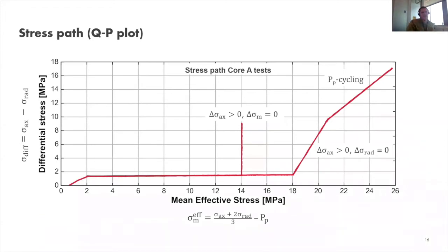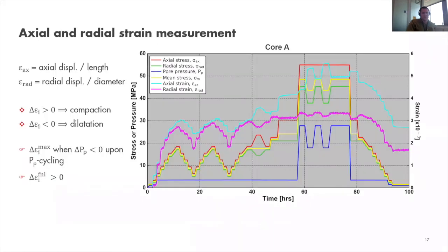For those familiar with QP plots — differential stress against mean effective stress — this is the shape of the QP diagram for each experiment. This is the part where we increase axial stress at constant mean stress, and this is the differential stress increase during pore pressure cycling at constant radial stress. We also measure axial and radial strain during these experiments, with compaction defined as positive change in strain.